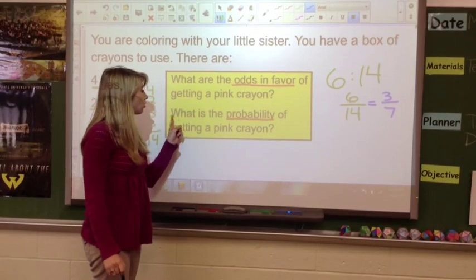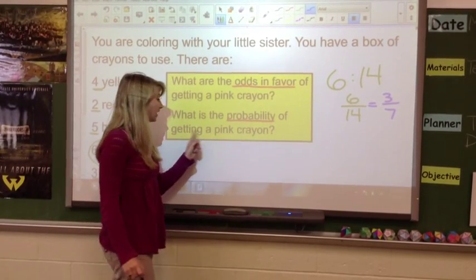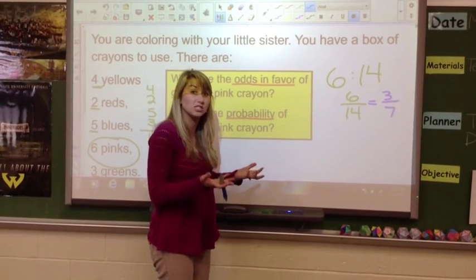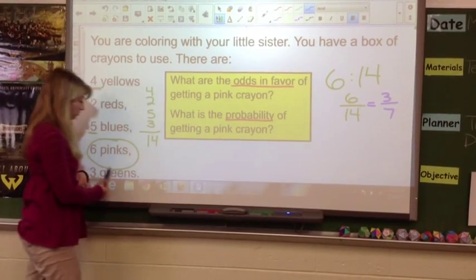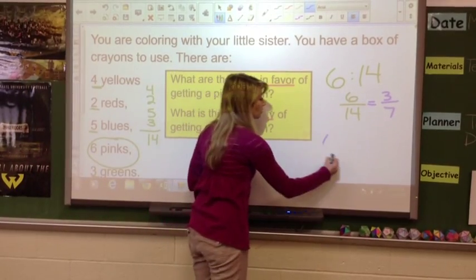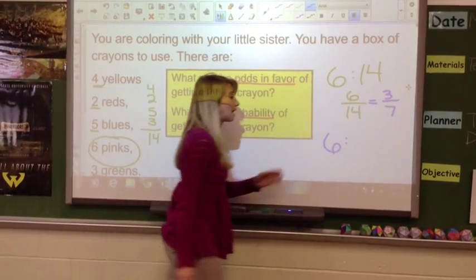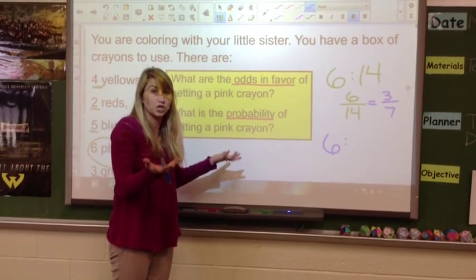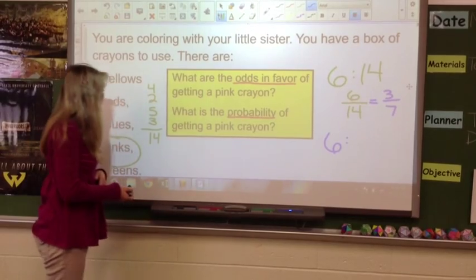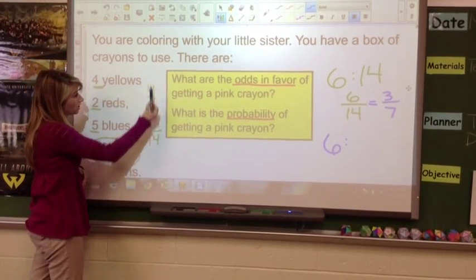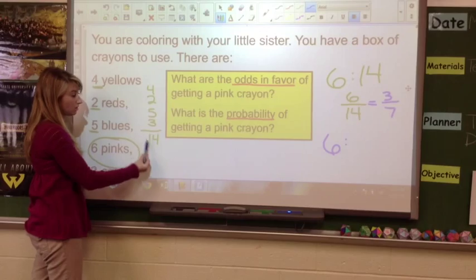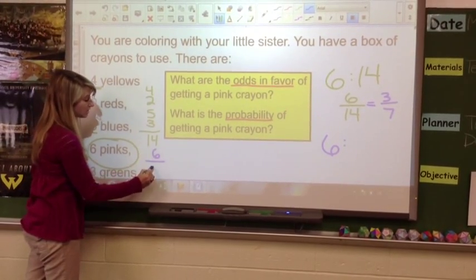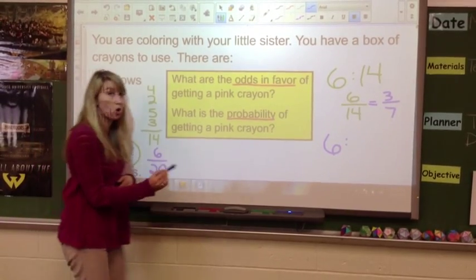Now we go to the second part: what is the probability of getting a pink crayon? Once again, we need to look at how many options we have to get a pink crayon. Like we said, we have six pinks, so we are back at six. Now what goes on the other side for probability is what is the total chances that we could get any color. So here we already added up the other options — let's also add the six pinks into it. Fourteen plus six gives me twenty total chances.